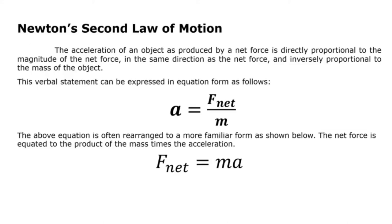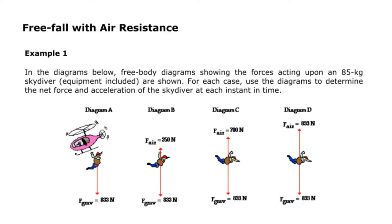As an equation, it is expressed as: a equals net force over mass. Rearranging our equation, the net force is equated to the product of the mass times the acceleration. For the first application of Newton's Second Law of motion, let us have free fall with air resistance.